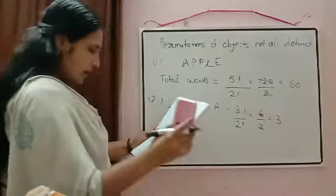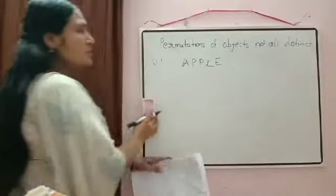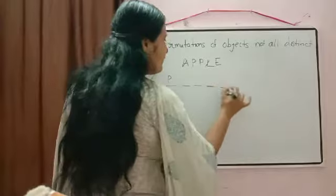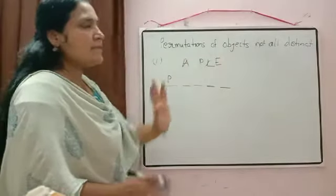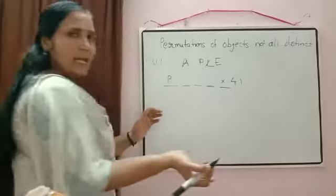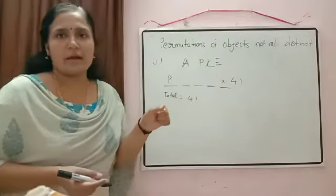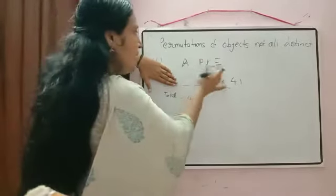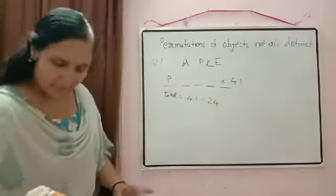Third condition: word starts with P. Fix one P at the start. Remaining four letters — A, P, L, E — are arranged in 4! ways with no repetitions among them. Total = 4! = 24.